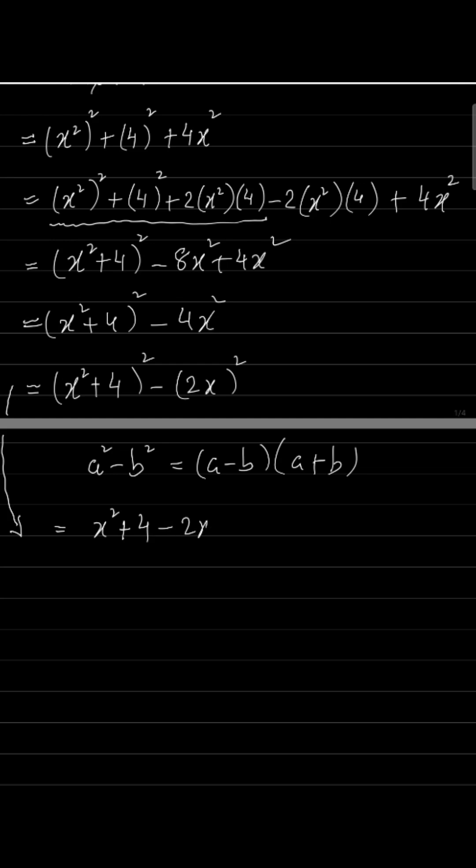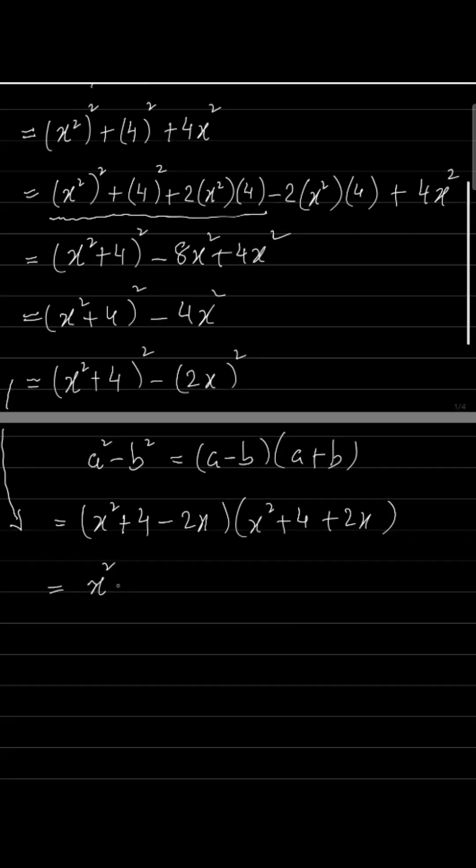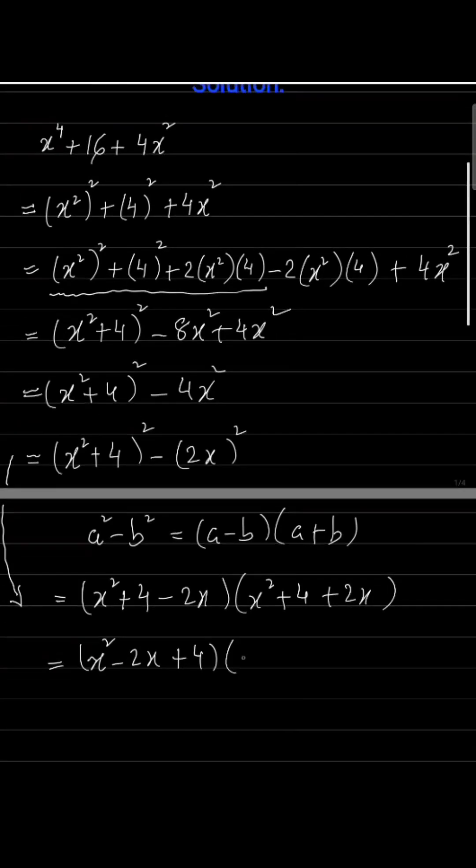...into (x² + 4 + 2x), which gives us (x² - 2x + 4)(x² + 2x + 4). And now we will rearrange for the required answer.